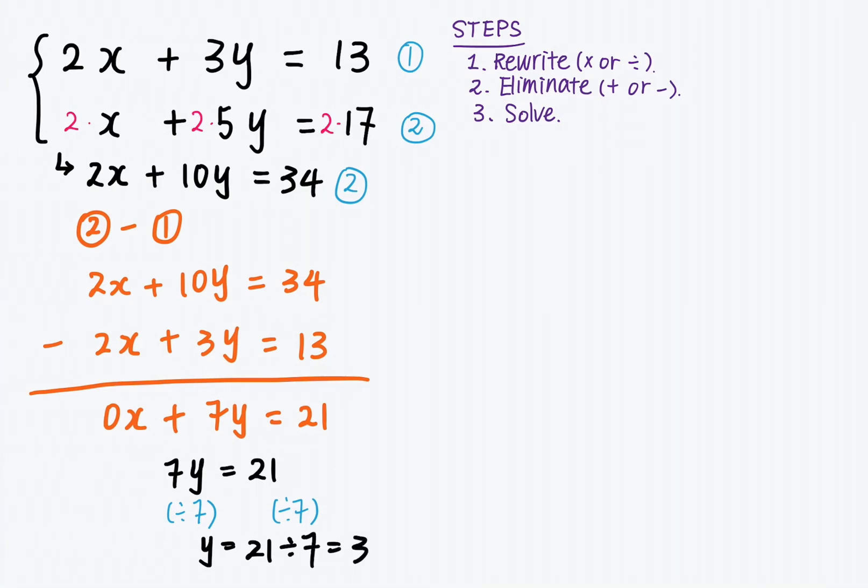So now if I sub y is equal to 3 into the second equation, I can use either equation to find my x value. But let's use the original equation because the coefficient of x is 1. So hopefully this can make the calculation easier. So I will substitute this value back into the second equation and write x plus 5 times 3, since I know y is equal to 3, equals 17. x plus 5 times 3 is 15, is equal to 17.